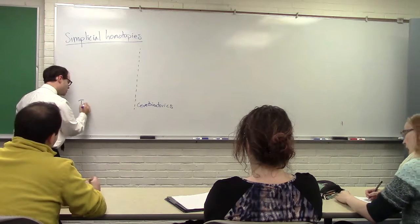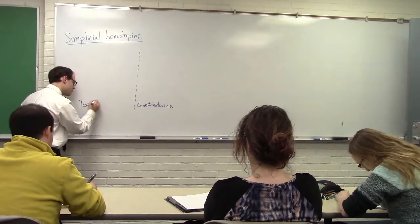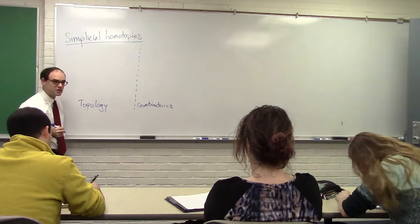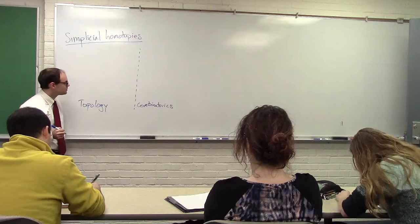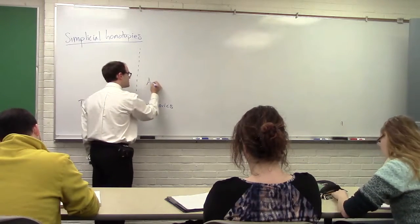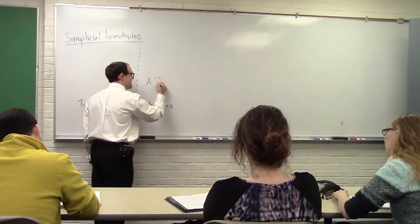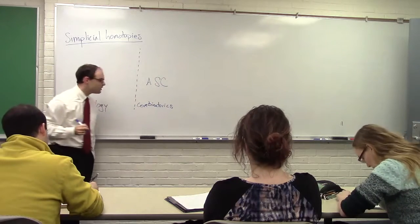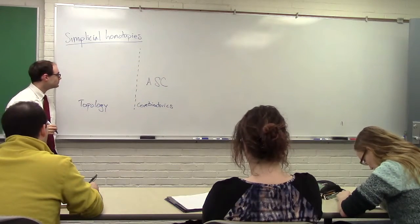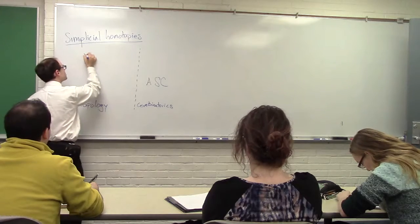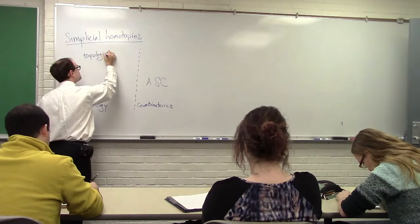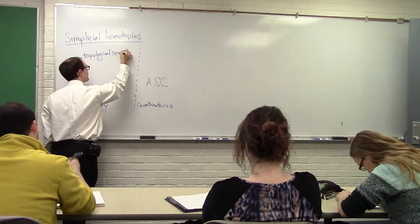On the other hand, there's topology, which is all about neighborhoods — what's near what. Abstract simplicial complexes, or ASC, live squarely in the realm of combinatorics. A topological space, pretty clearly, lies over here on the other side.